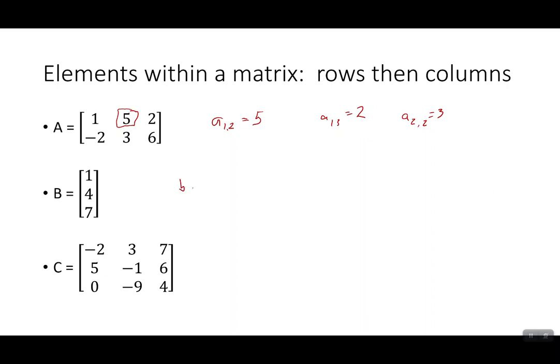And B three one would be third row, first column. That would be the seven. I'm looking down here in the B matrix. It'd be the third row and then the first column. And so if you want to recreate the whole matrix B, B one one is equal to one, B two one is equal to four, and B three one is equal to seven. So we could list out that matrix just by listing its number of terms.